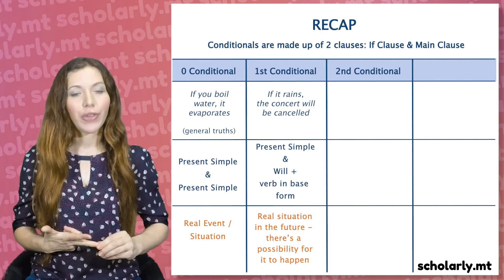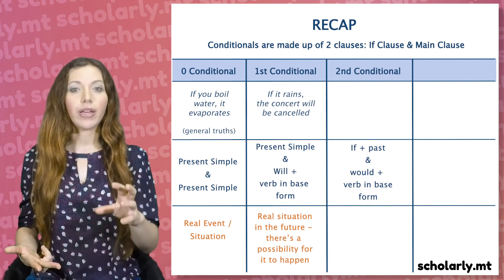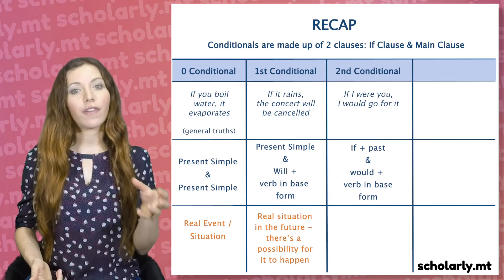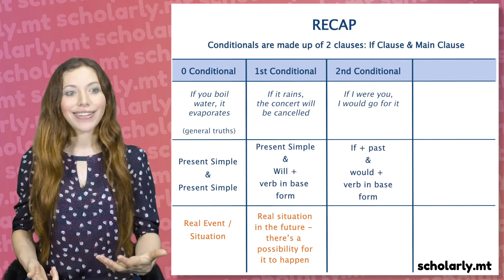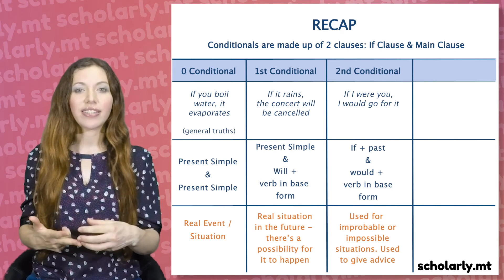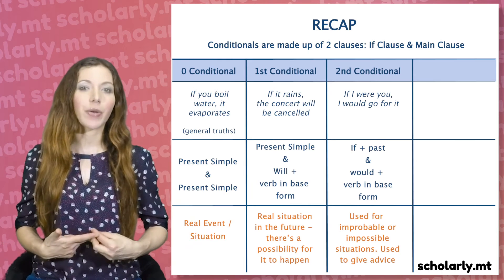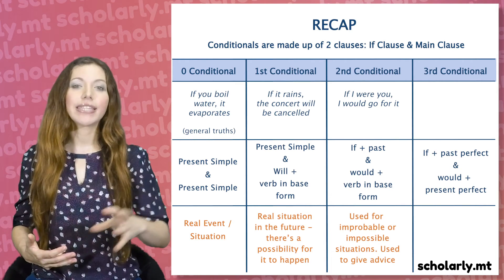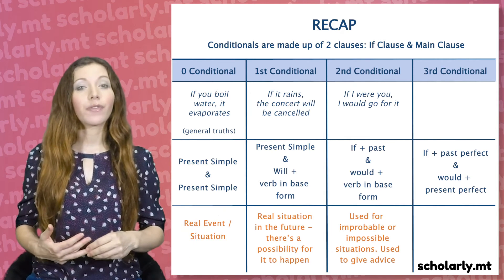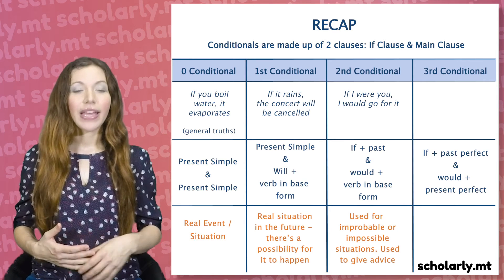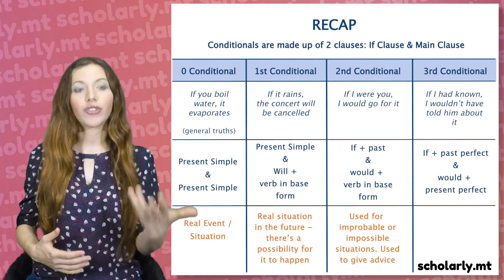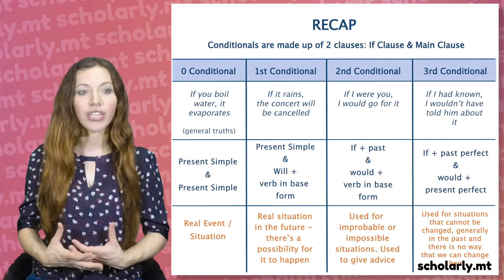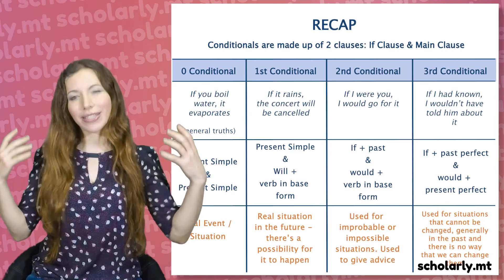The second conditional uses a past verb in the if clause and 'would' plus the base verb in the main clause — 'If I were you, I would go for it' — used for improbable situations and to give advice. The third conditional uses the past perfect after 'if' and 'would' plus the present perfect in the main clause — 'If I had known, I wouldn't have told him about it' — used for situations that cannot be changed, generally referring to something that happened in the past.